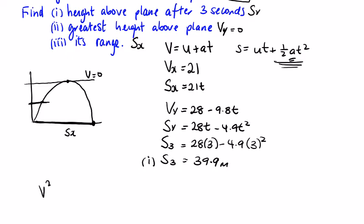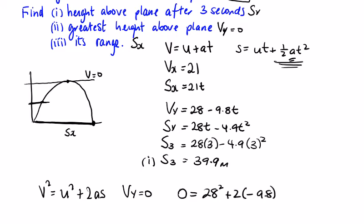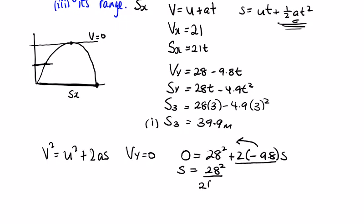Using v² = u² + 2as with V_y = 0: 0 = 28² + 2(−9.8)s. Bringing the negative term to the left and dividing, s = 28² / (2 × 9.8).